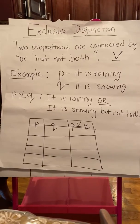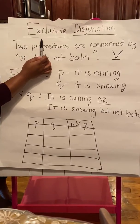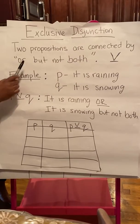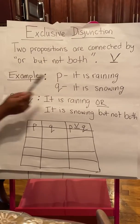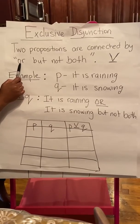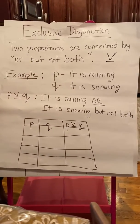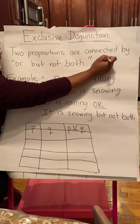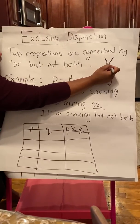In today's video, we're going to look at exclusive disjunction. It's when you have two propositions and they're connected by an 'or,' but not both. And this is when you have a V with a line underneath.